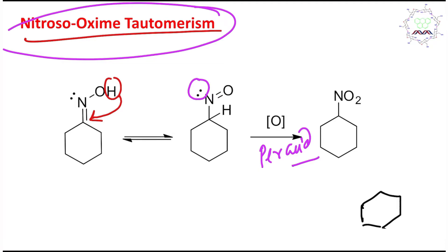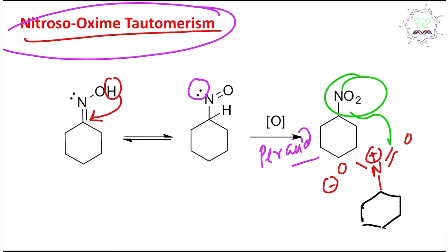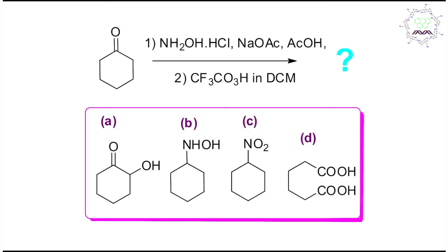The peroxy acid causes oxidation and produces NO₂. Writing the nitro group structure: it is O⁻–N⁺=O. In this way the oxime is converted into the nitro compound. So the answer in this case is option C.